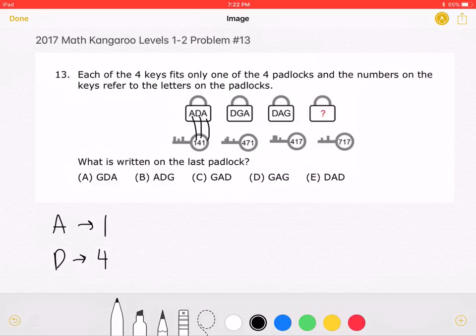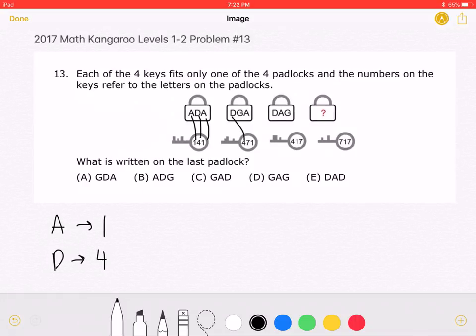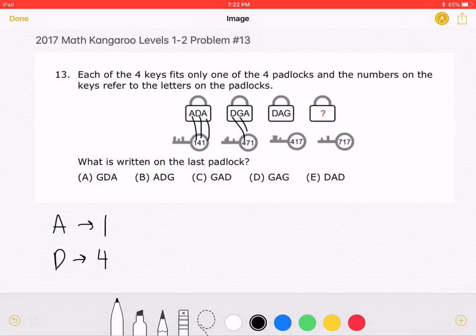Now let's do the same thing to the second padlock. D corresponds with 4, G corresponds with 7, and A with 1. Now, we also learned that G is equal to 7.